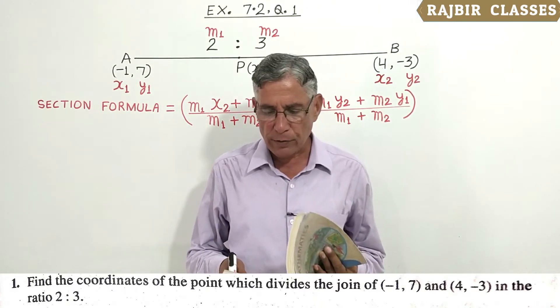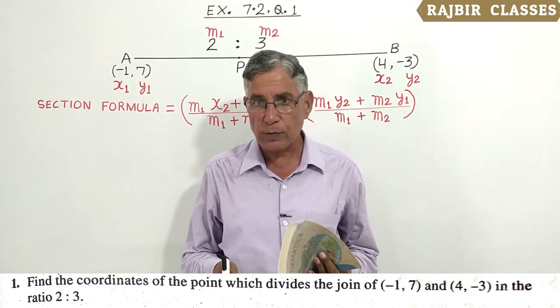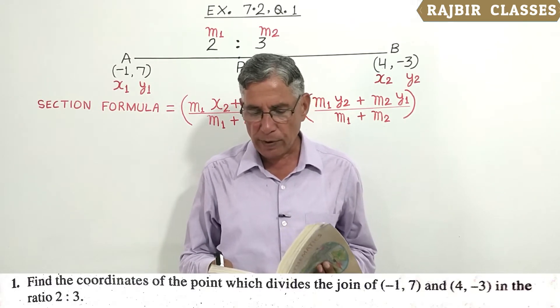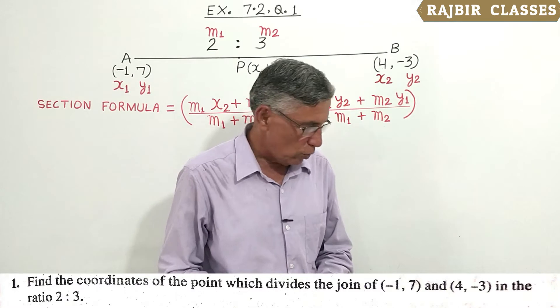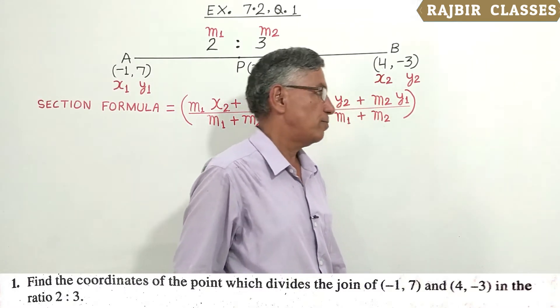Find the coordinates of the point which divides the join of (-1, 7) and (4, -3) in the ratio 2:3.